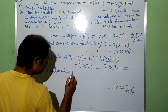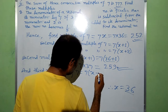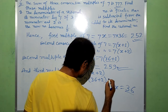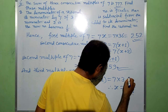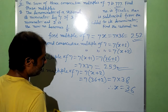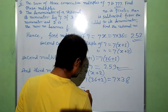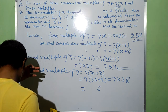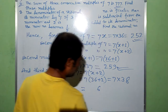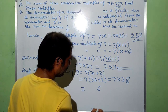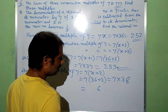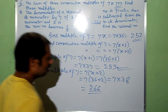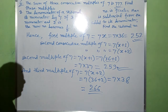And the third multiple of 7 is equal to 7 into x plus 2, which is 7 into 36 plus 2, that is 7 into 38. Now 7 eights are 56, 7 threes are 21, plus 5 gives 266. This is the required third multiple of 7.